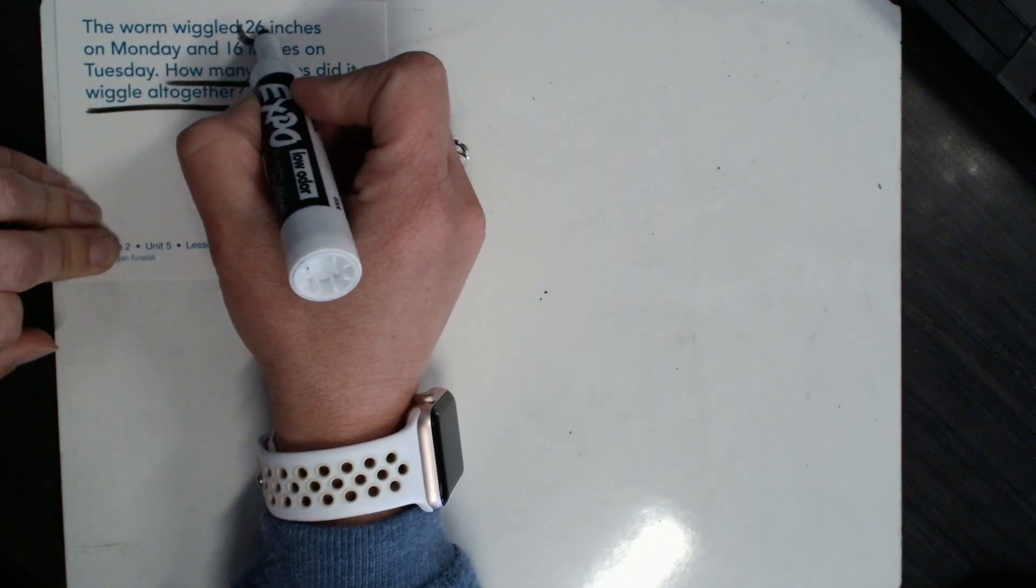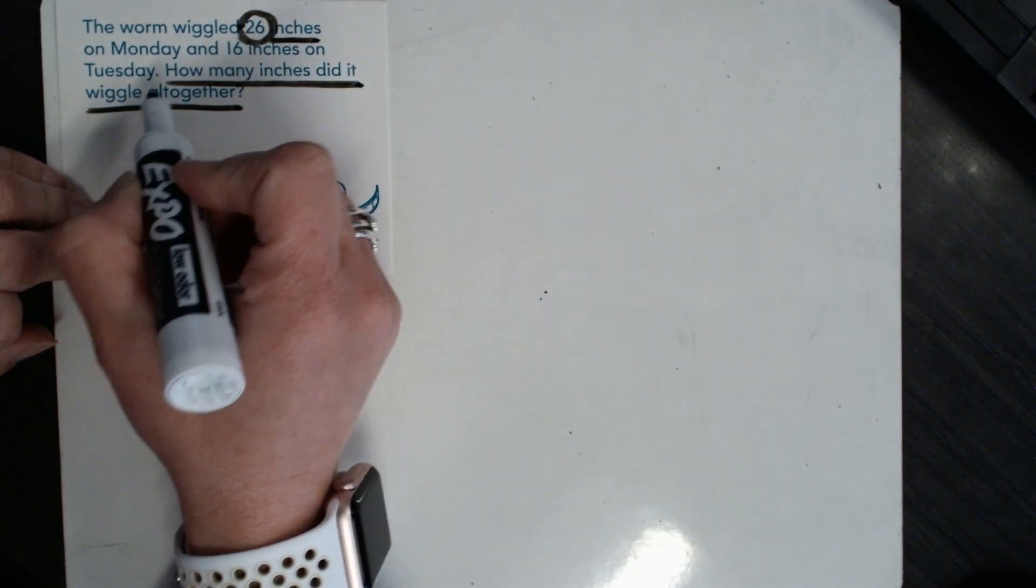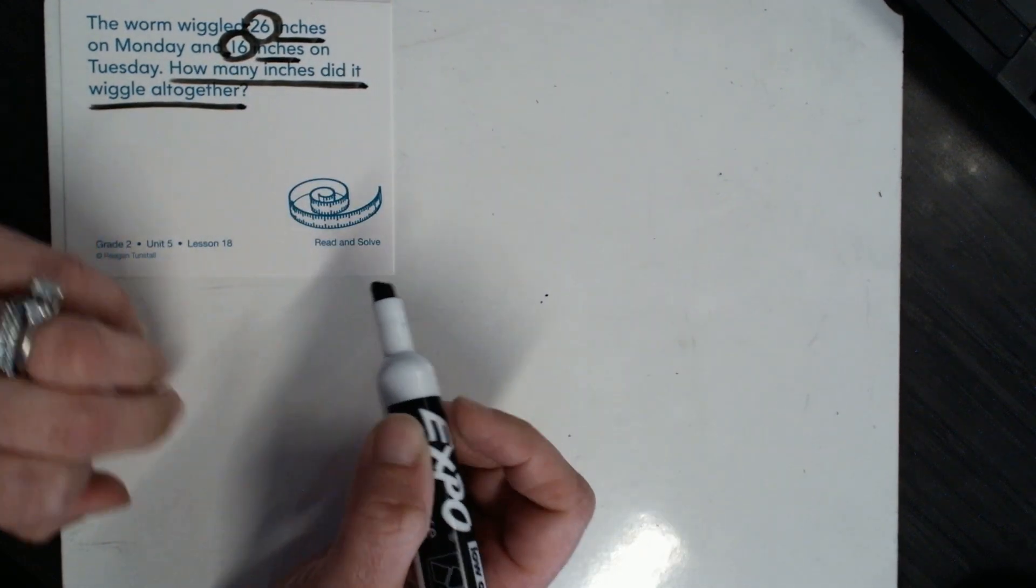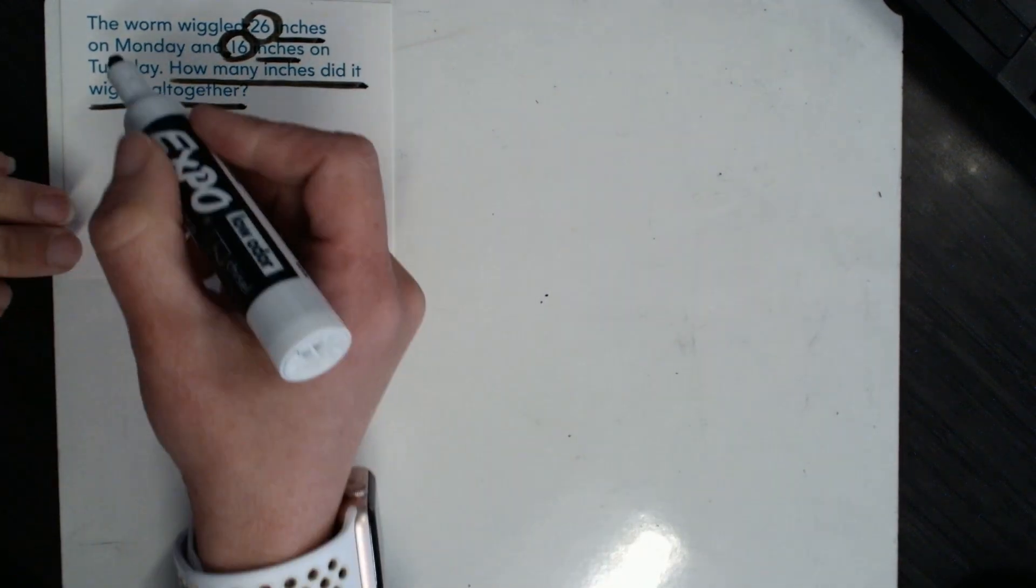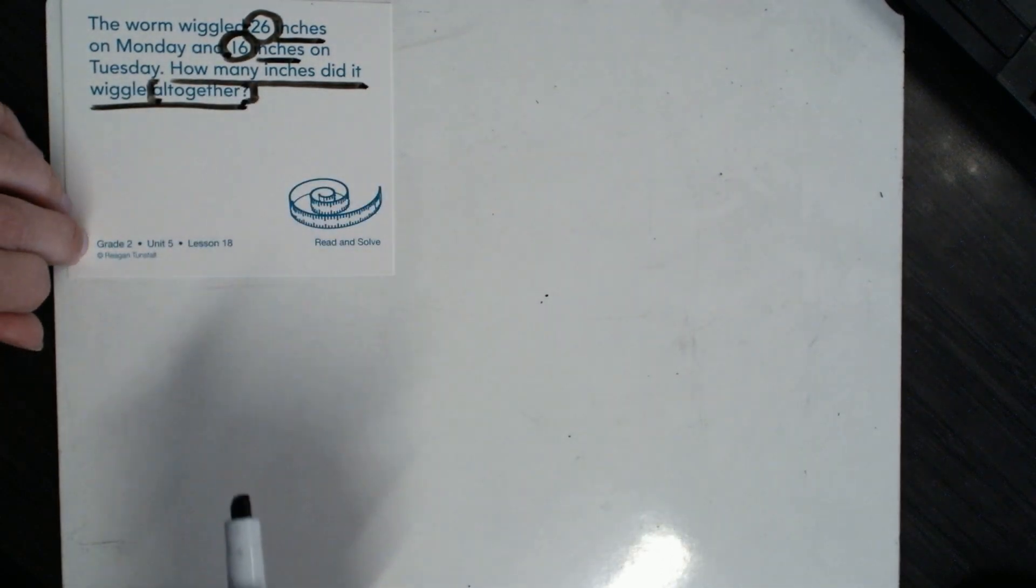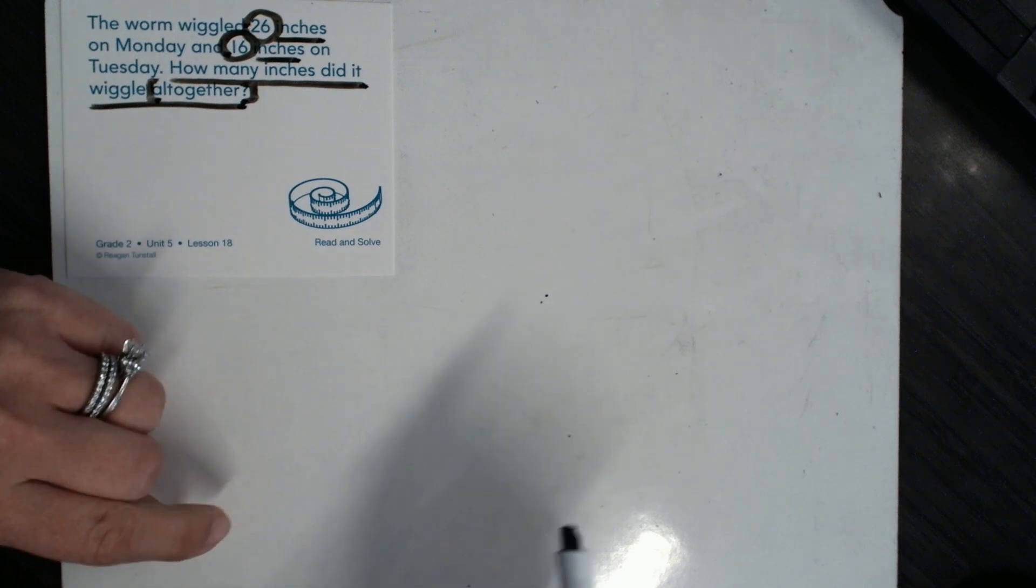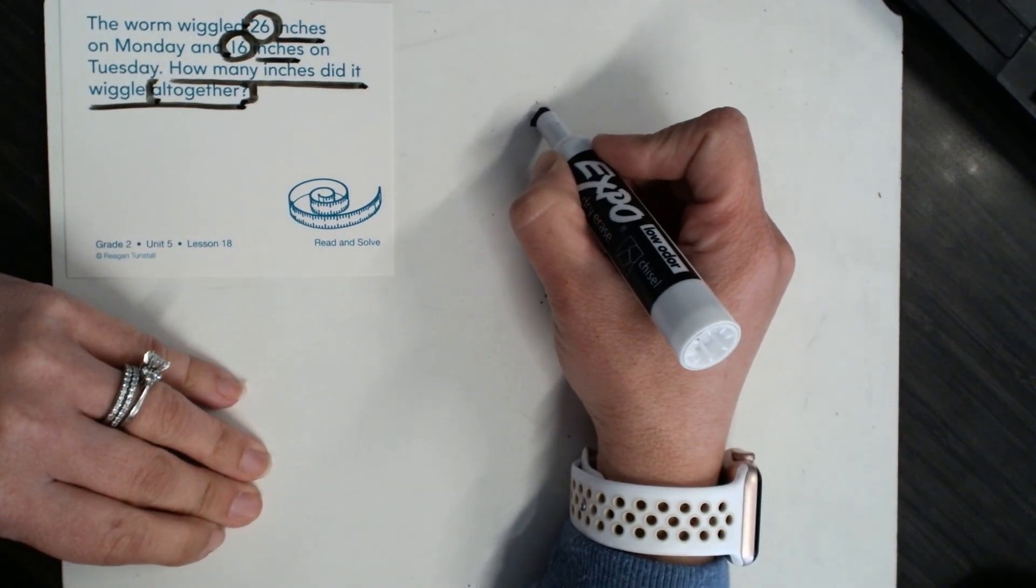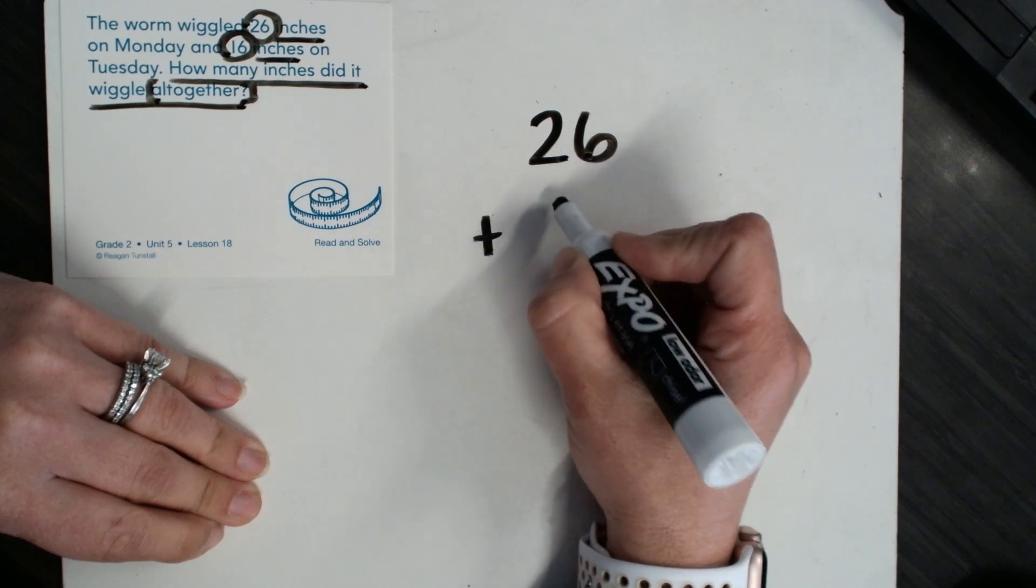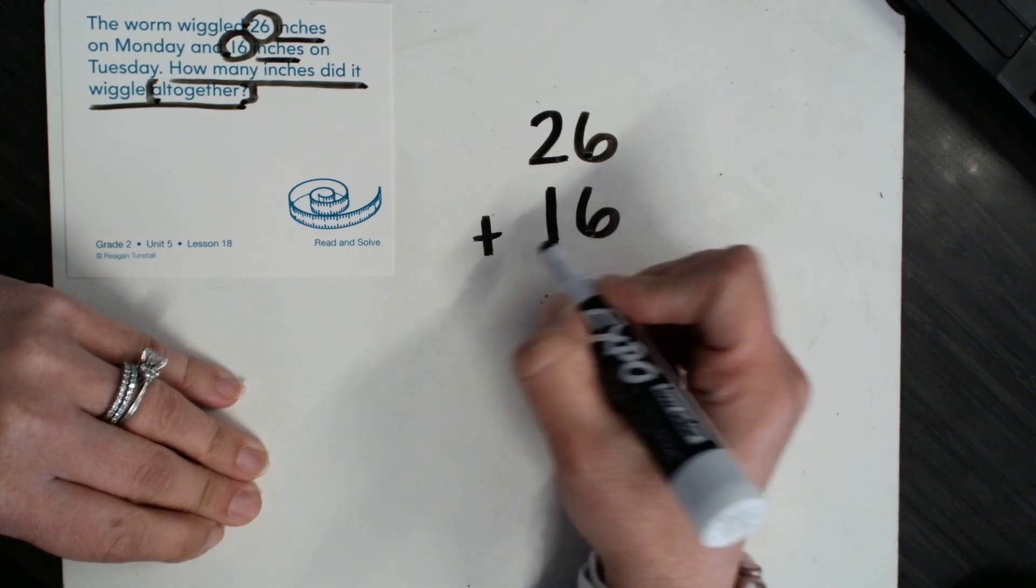The worm wiggled 26 inches on Monday and 16 inches on Tuesday. So all together, that's an action word, and that tells me that we're going to add. So 26 inches for Monday plus 16 inches for Tuesday.